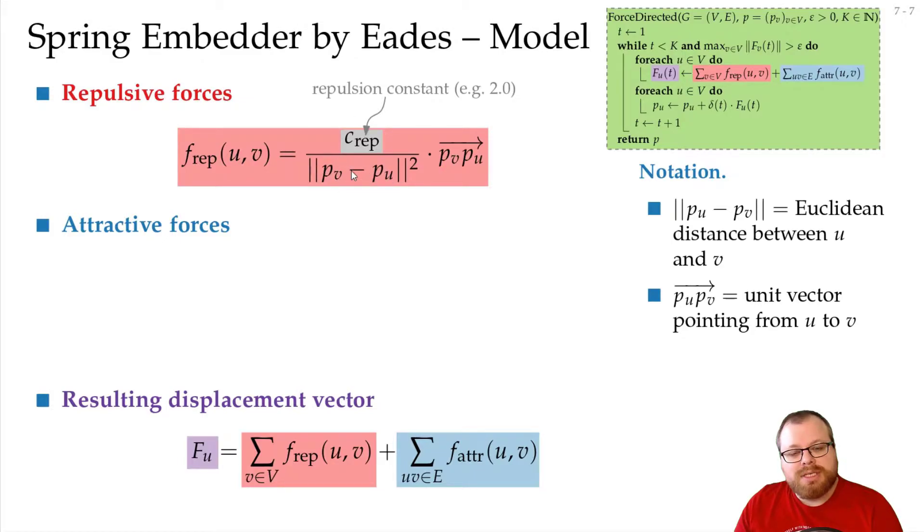The closer the two vertices get, since we have the distance of them squared in the denominator, the larger the force gets that moves them away. If they are very far away from each other, then this whole term here is really really small, so there is barely any force between them.